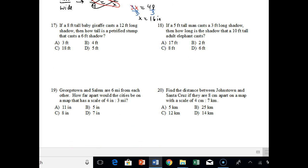Number 17, if an 8 foot tall baby giraffe casts a 12 foot long shadow, then how tall is a petrified stump that casts a 6 foot shadow? So again, we're doing something how tall it is and then how long the shadow is. So tall, then shadow. And the first ratio they gave us was something that was 8 feet tall and it was a 12 foot shadow. Then how tall is a petrified stump that casts a 6 foot shadow? So again, in the second one they said 6 foot shadow. 6 foot shadow, shadow is on bottom. 6 should go on bottom. X should go on top.